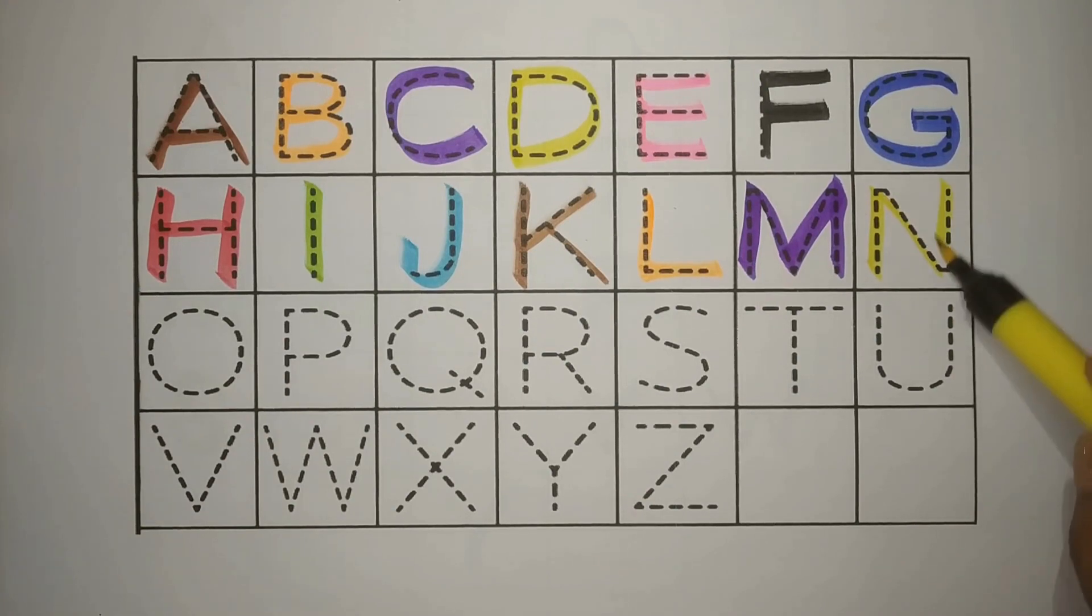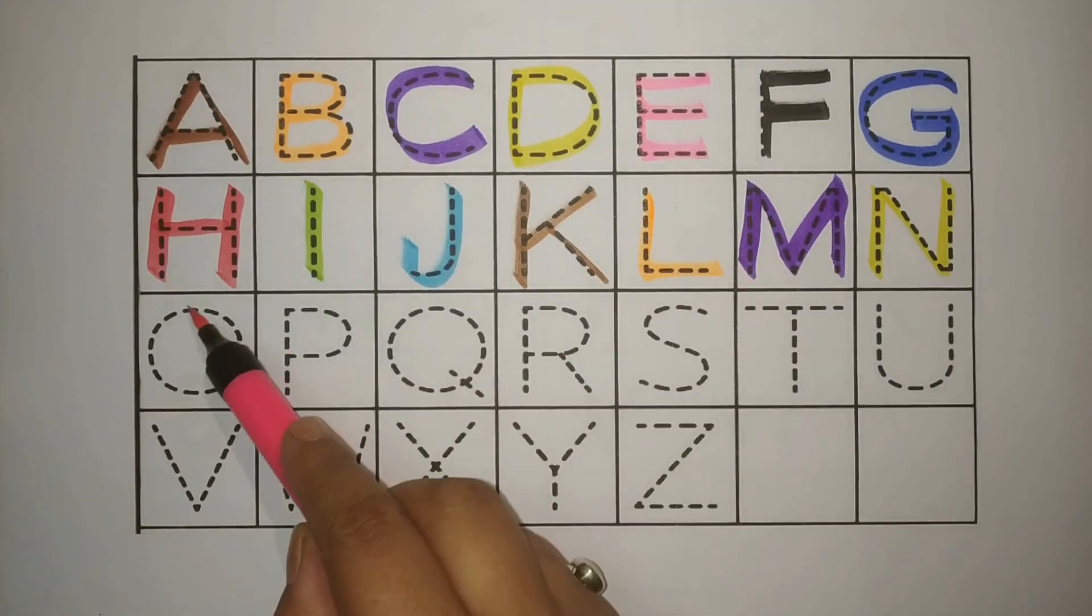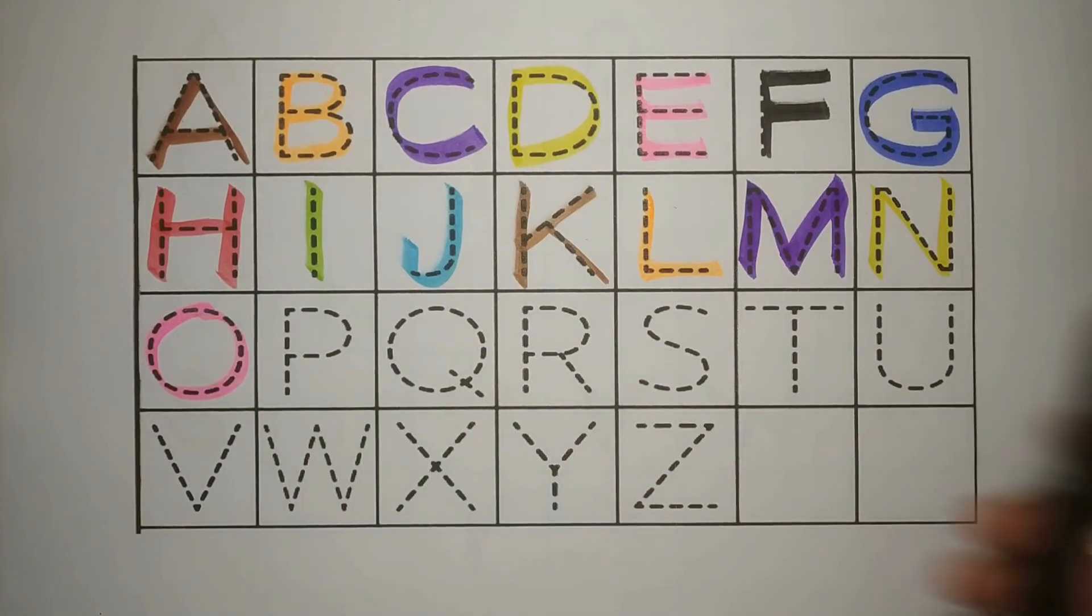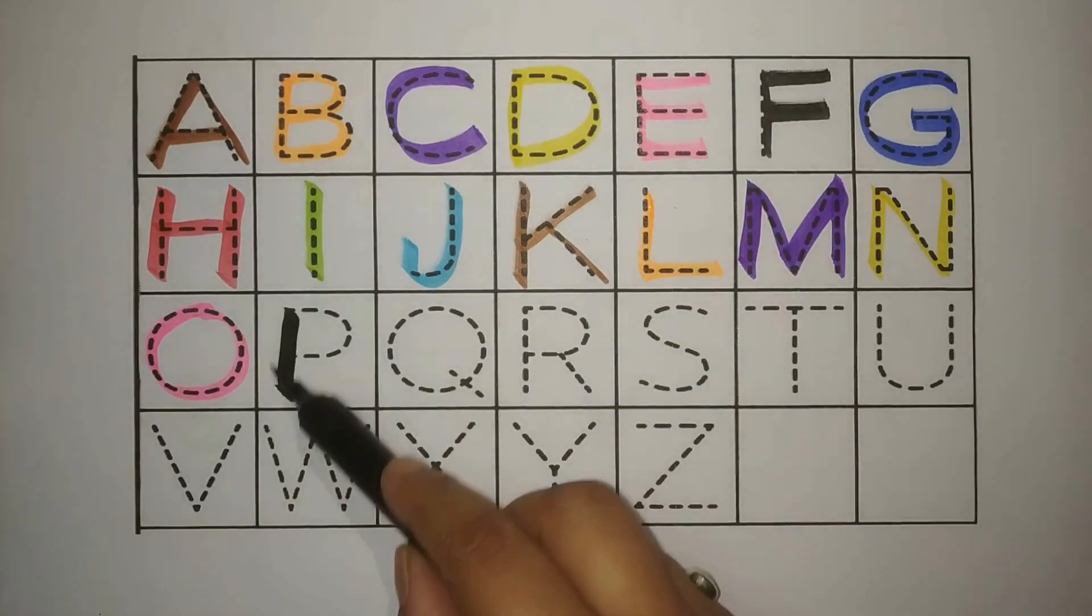Yellow N, N for Nose, Nark. Pink O, O for Owl, Ullu. Black P, P for Penguin.